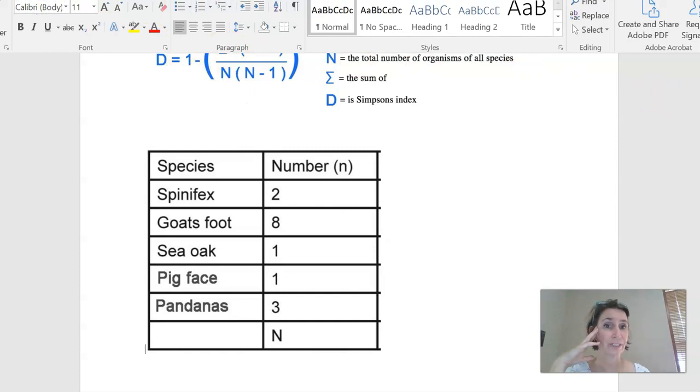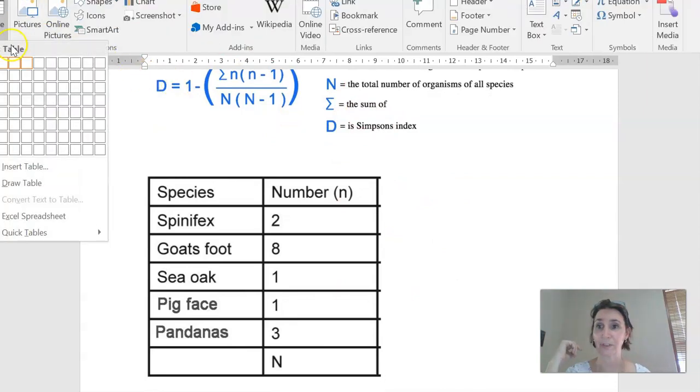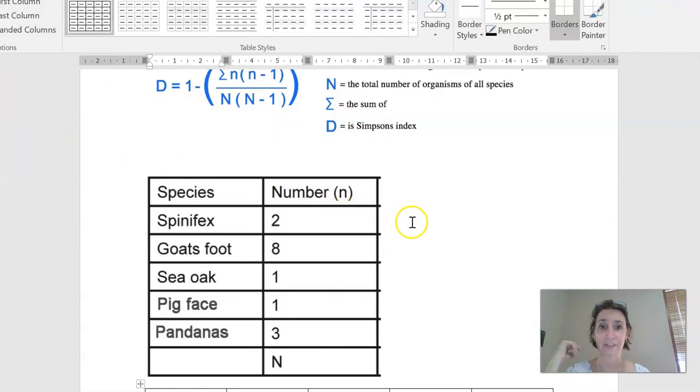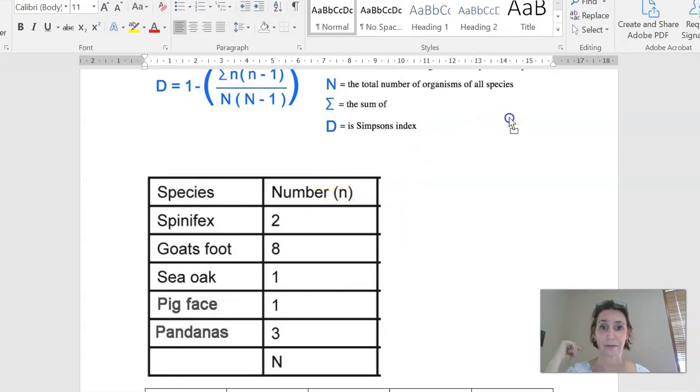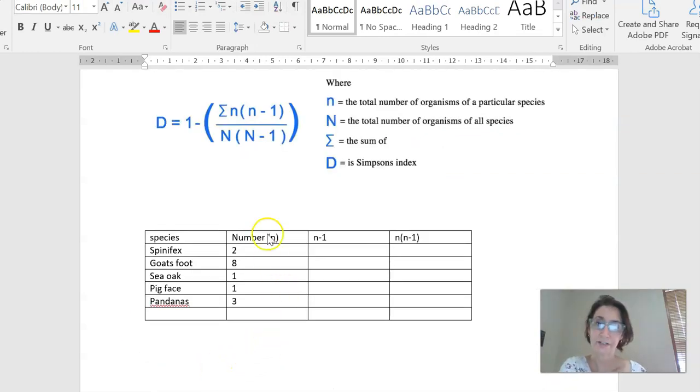The first thing I want to do is to actually, instead of using this table, I'm going to make my own table because I want to add a couple of extra pieces of data into the table. So all I've done here is I've just retyped that same information into a table, but I've got two additional columns here, which are n minus 1 and n times n minus 1. And you'll notice that n is the total number of organisms of a particular species. So here we've got 2 is the n for spinifex and 8 is the number or n for goat's foot.